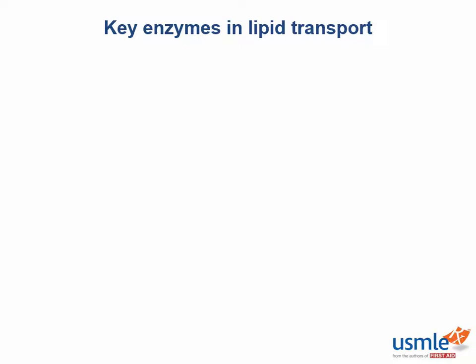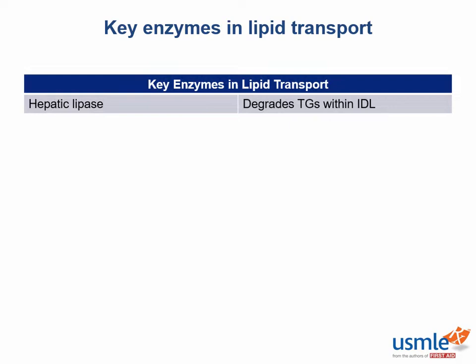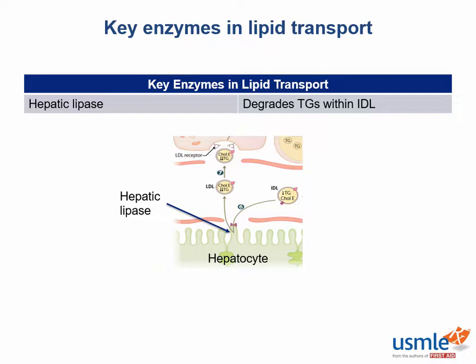So next up we're going to talk about a few key enzymes in lipid transport. Our first one is hepatic lipase. Hepatic lipase works within hepatocytes to degrade triglycerides within IDL particles. After this process takes place, an LDL particle is formed, and this LDL particle is then released back into systemic circulation.